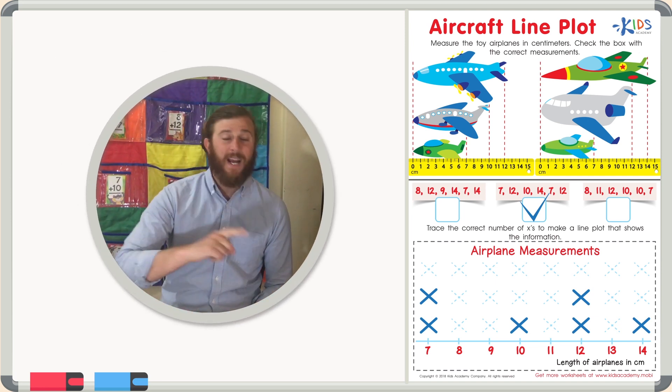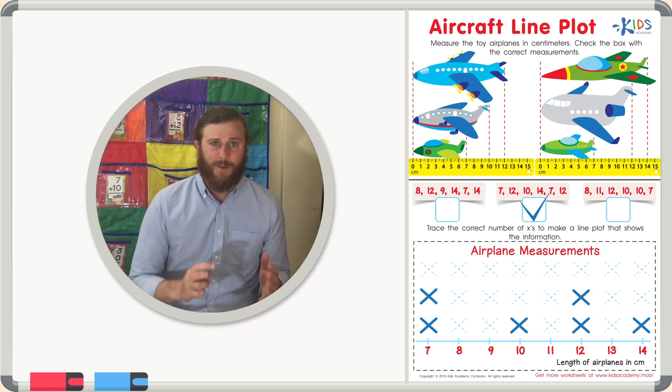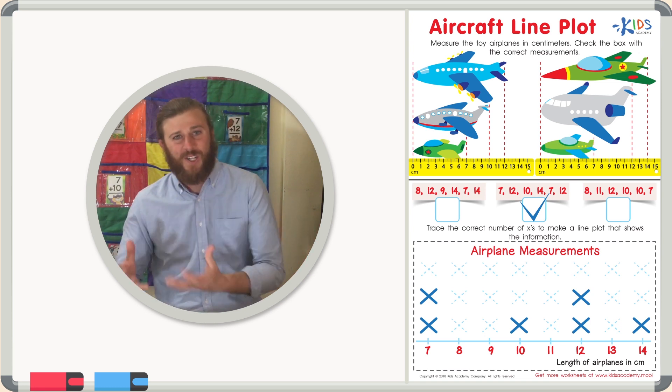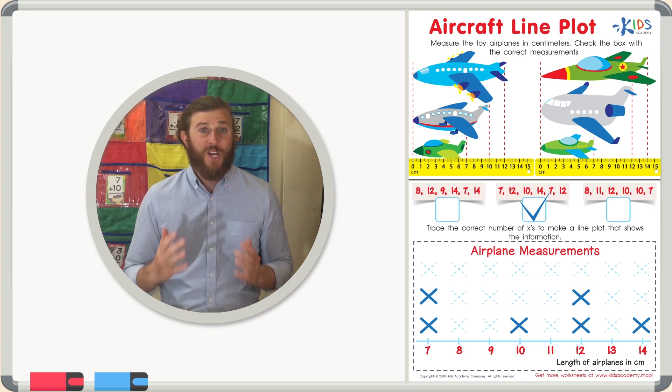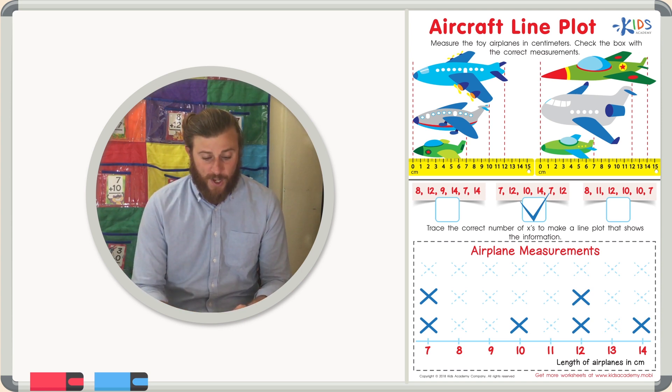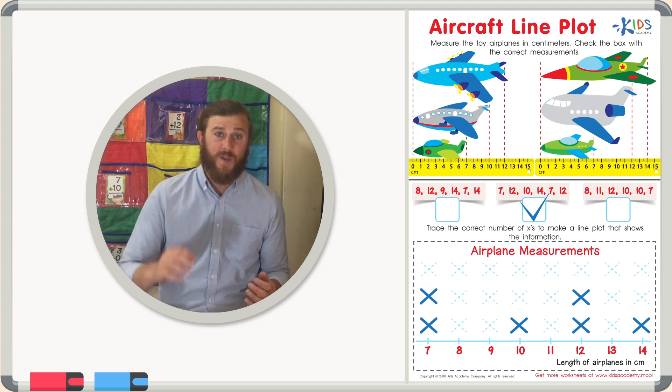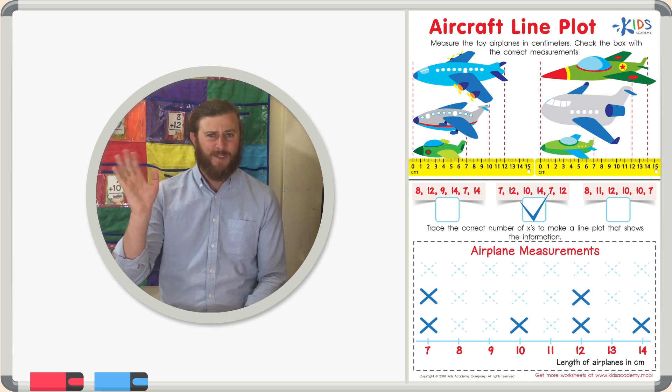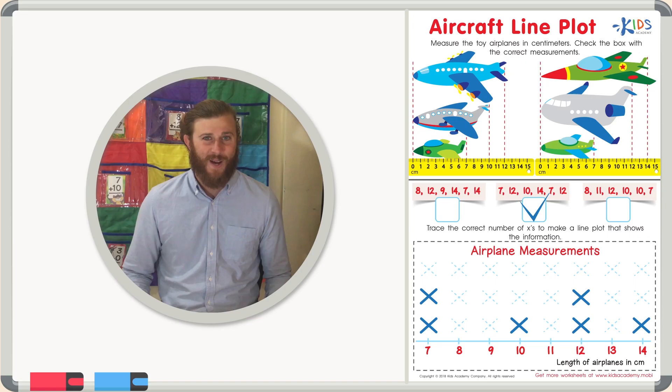Remember boys and girls, when you're making a line plot, be really careful to transfer the data that you have in your data set onto your line plot carefully. You can do this by putting your numbers in order first to make sure that you've checked off each number and added to your line plot. Thanks for watching, boys and girls, and we'll see you next time.